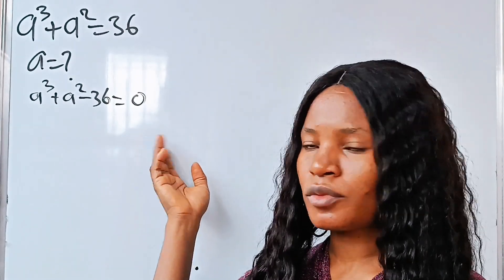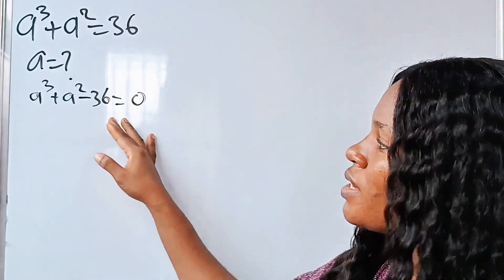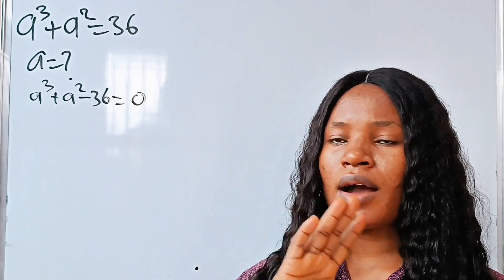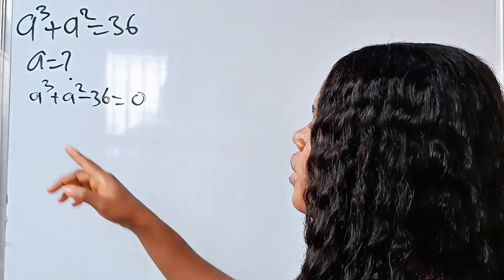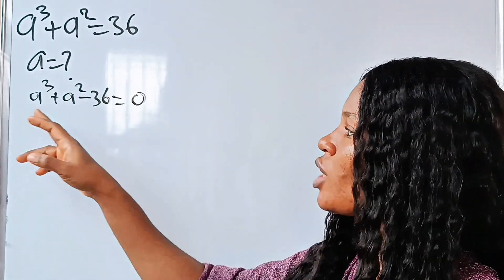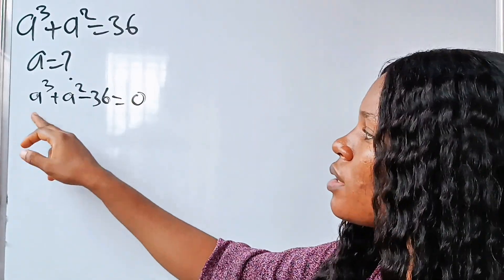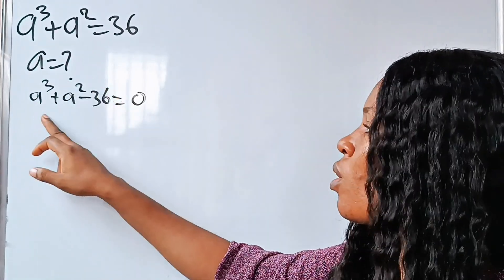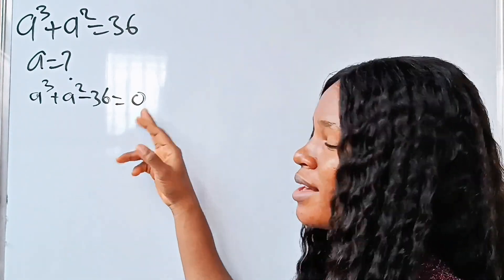This is a cubic polynomial. Now, how do we solve it? We cannot solve this by the factorization method. Rather, we need to get the first factor using the trial and error method. We are going to assign a to be a particular number and try it out to see if we get 0. If we say a equals 1: 1 to the power of 3 is 1, plus 1 squared is 1, so 1 plus 1 is 2, and 2 minus 36 is not equal to 0. If you try 2, you are still not going to get 0.